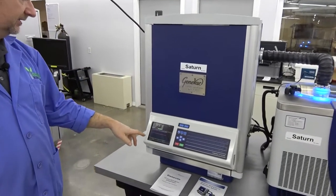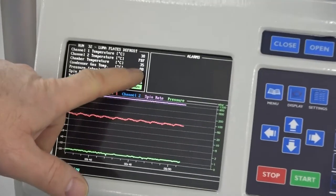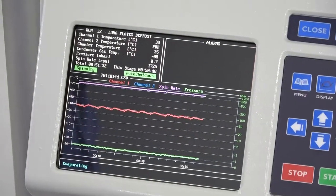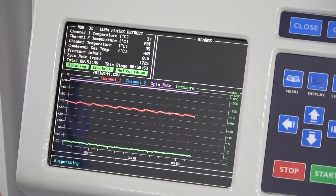If you look at the screenshot, you can see on the condenser on these particular models with the newer upgrade condensers, this thing's getting down to negative 88 degrees Celsius. You're going to be able to evaporate any kind of solvents out there with those type of temperatures.